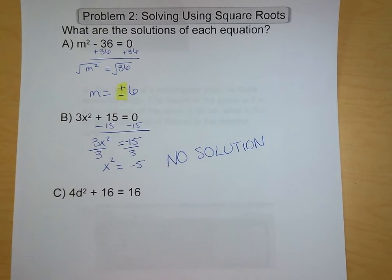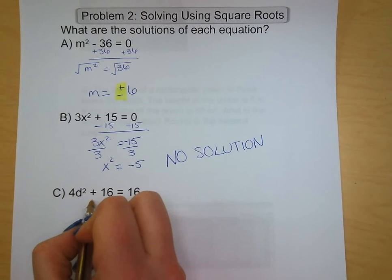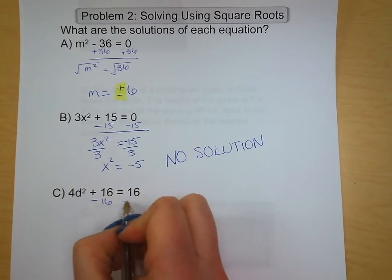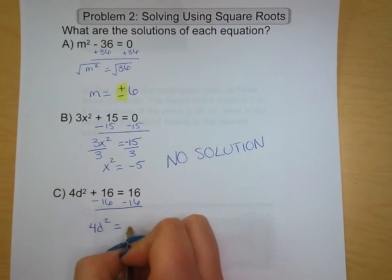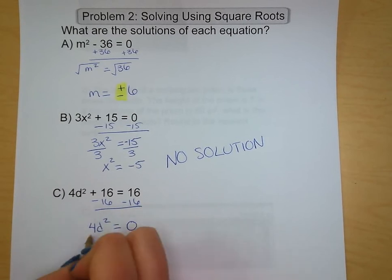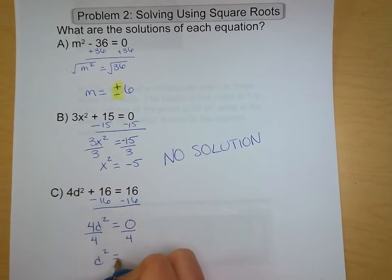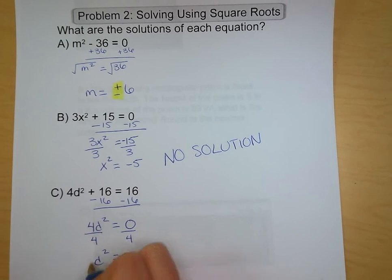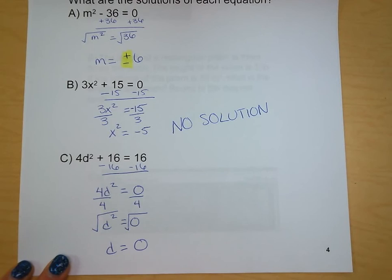For 4d squared plus 16 equals 16, subtract 16 from both sides to get 4d squared equals 0. Divide both sides by 4 to get d squared equals 0. Take the square root of both sides, and d equals 0. Since 0 can't be positive or negative, there is only one solution for this problem.